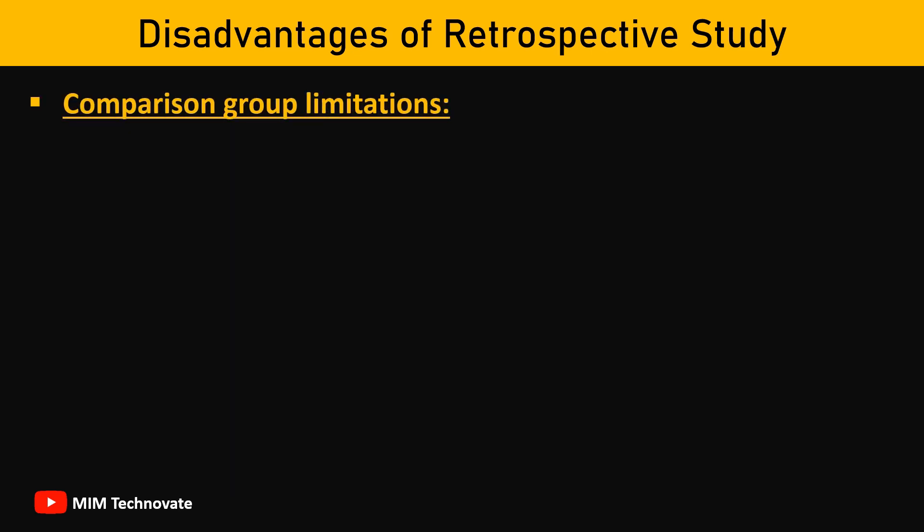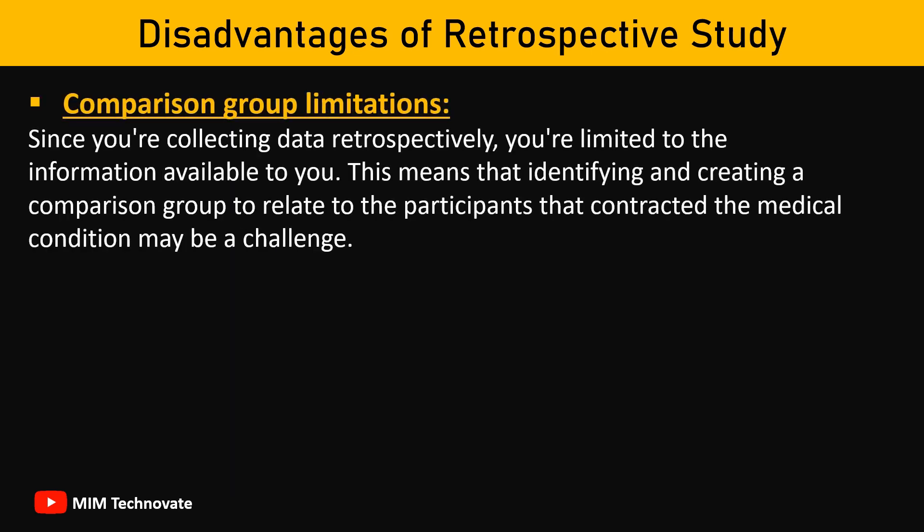Comparison group limitations: Since you're collecting data retrospectively, you're limited to the information available to you. This means that identifying and creating a comparison group to relate to the participants that contracted the medical condition may be a challenge.